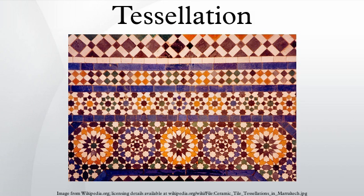In architecture, tessellations have been used to create decorative motifs since ancient times. Mosaic tilings were used by the Romans, often with geometric patterns. Later civilizations also used larger tiles, either plain or individually decorated. Some of the most decorative were the Moorish wall tilings of buildings such as the Alhambra and the Mosque of Córdoba. Tessellated designs also often appear on textiles, either woven, stitched, or printed. In the context of quilting, tessellation refers to regular and semi-regular arrangements of either patch shapes or the overall design.